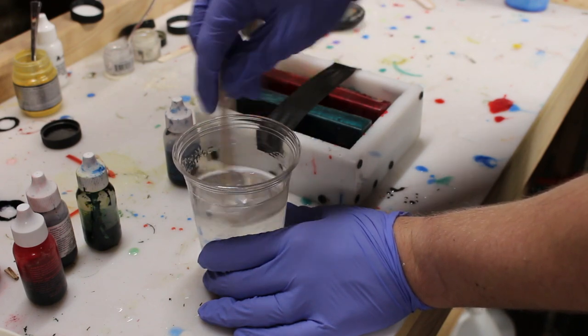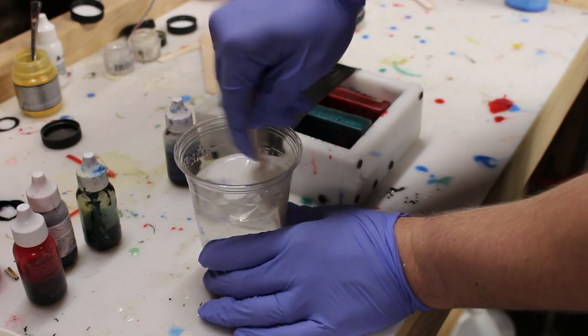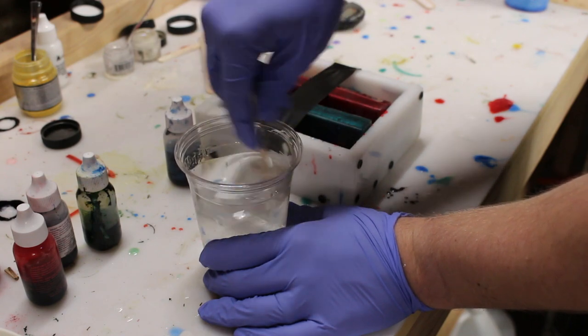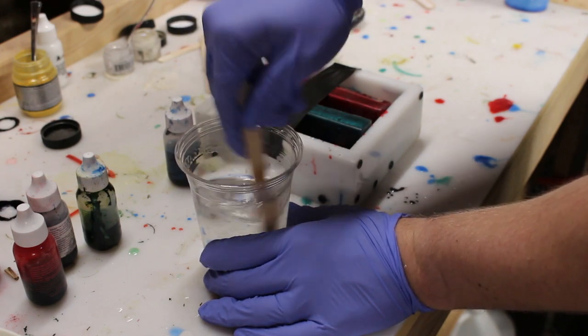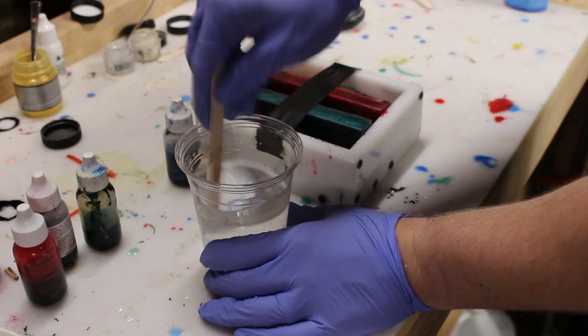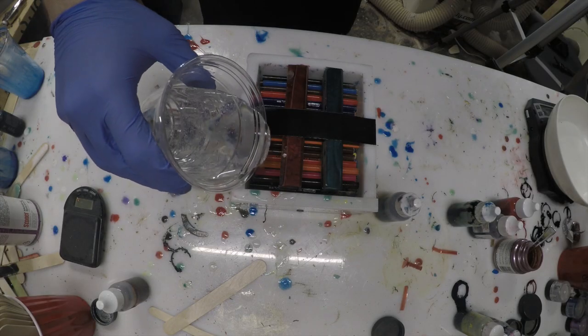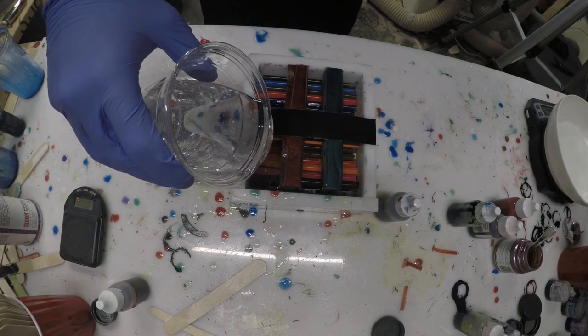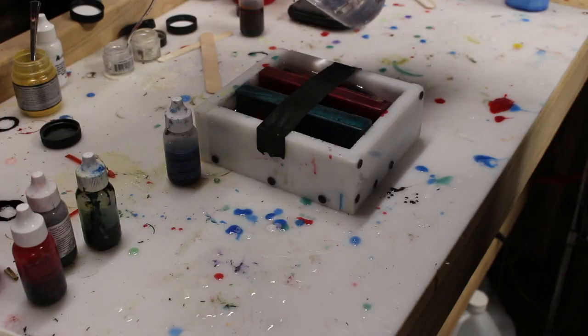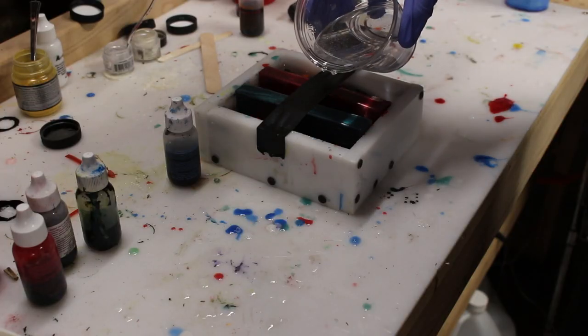Then I mix it until it's crystal clear. Of course there's going to be bubbles, but I'm going to put the resin under pressure for about four hours at 80 PSI at the very end. So I mix it until it's clear and I don't see any more striations or lines.